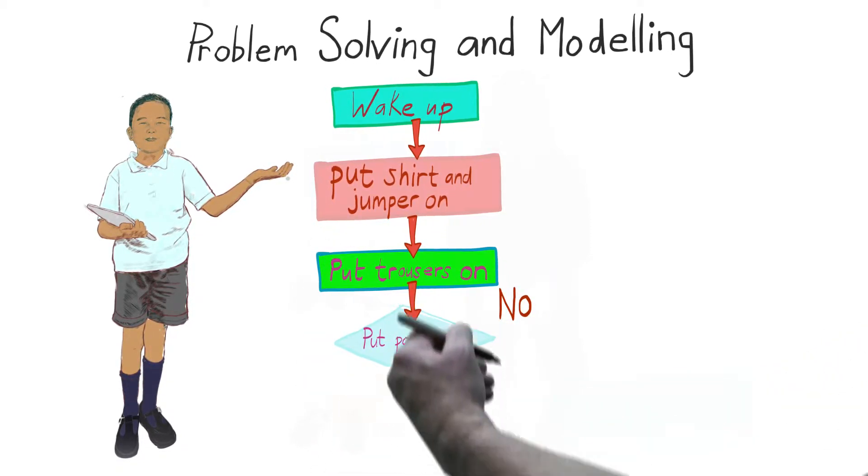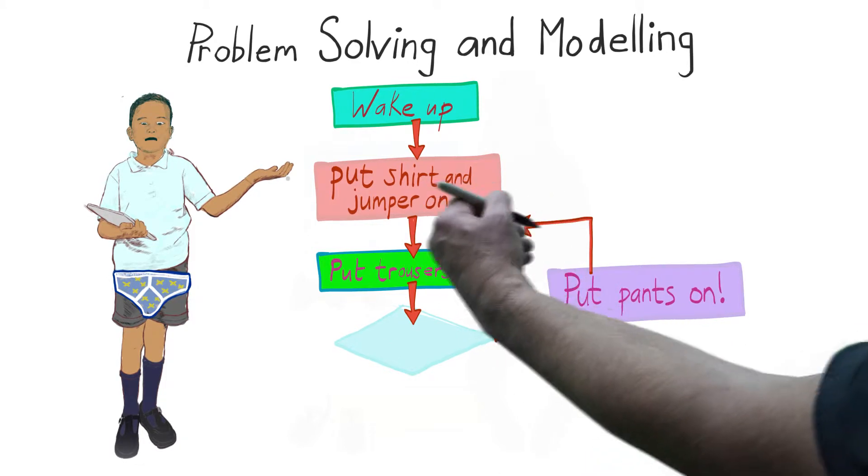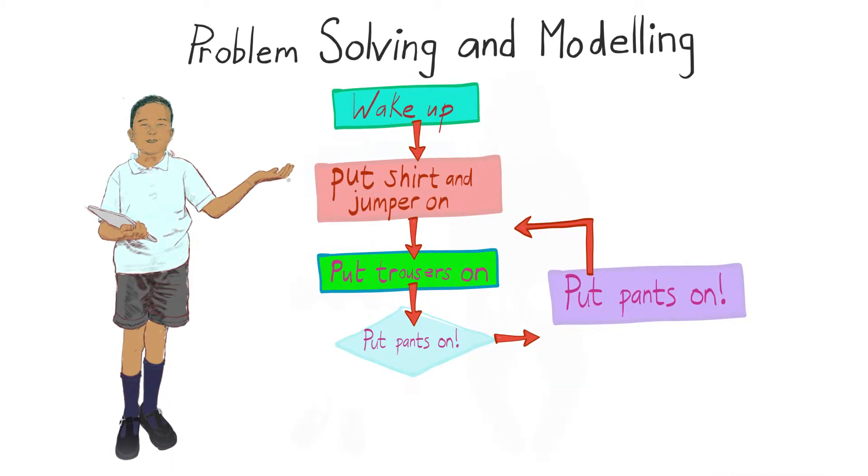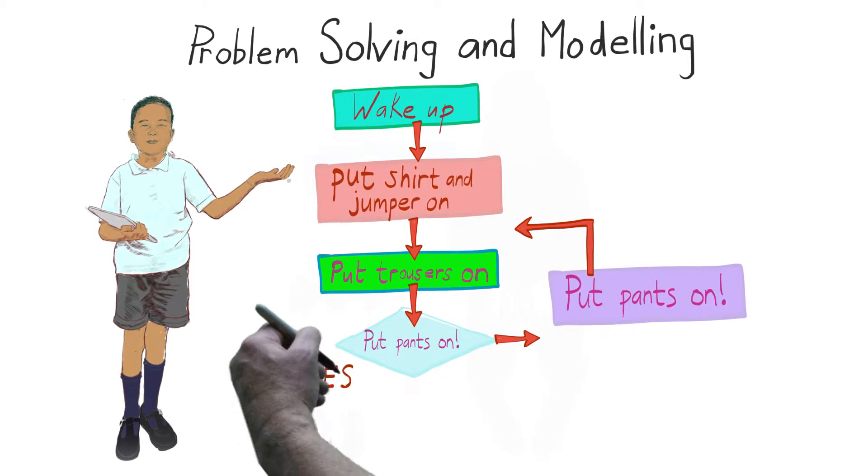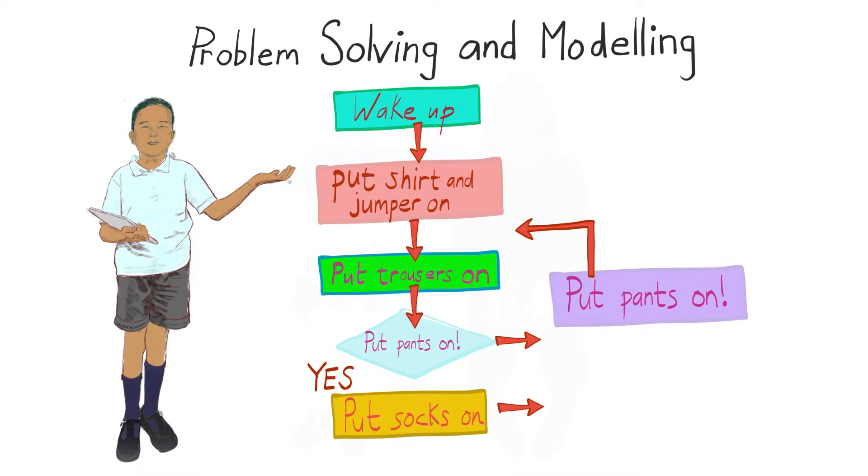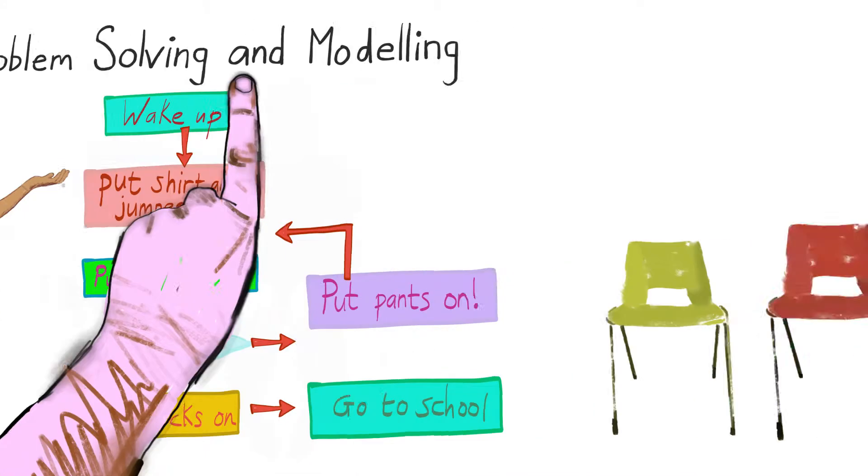But I can also look at my diagram and test to see if it works. After all, if the sequence is wrong, I could end up like Superman, but in the wrong way. So I can fix that. And I can see how to take shortcuts, like repeating the bit where I put my second sock on, because it's just how I did it the first time.